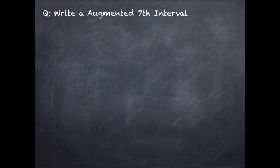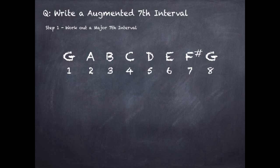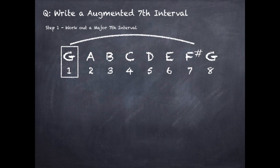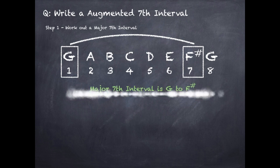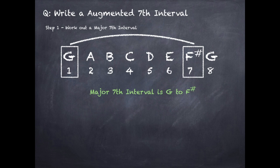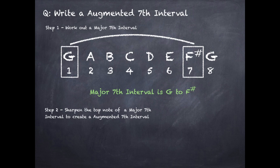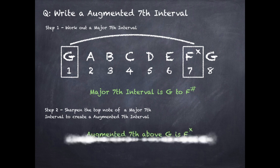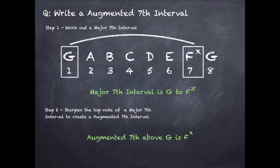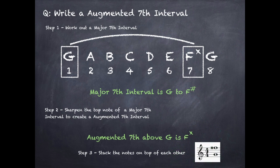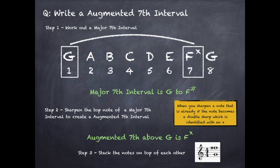To write an augmented seventh interval, first work out the major seventh interval. We go from G to the seventh note of the G major scale, which is F sharp. So our major seventh interval is G to F sharp. Now sharpen the top note to create an augmented seventh — when you sharpen an F sharp, it becomes an F double sharp. So an augmented seventh above G is F double sharp. Remember: when you sharpen a note that is already sharp, it becomes a double sharp, and the double sharp symbol is an X.